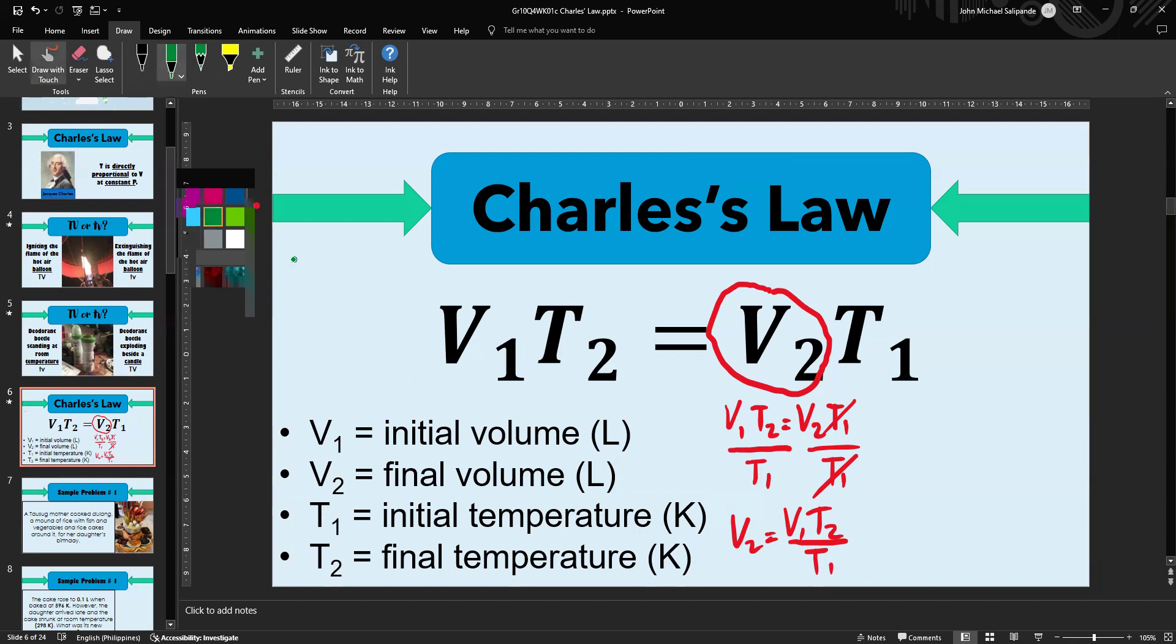The other variable to solve is T₂. The two variables joined by multiplication are V₁ and T₂. Since we're concerned with T₂, we have to isolate V₁ by division. We divide both sides by V₁. To solve for T₂, we use the formula T₂ = V₂T₁ / V₁. Cancel V₁ on the left side of the equation.